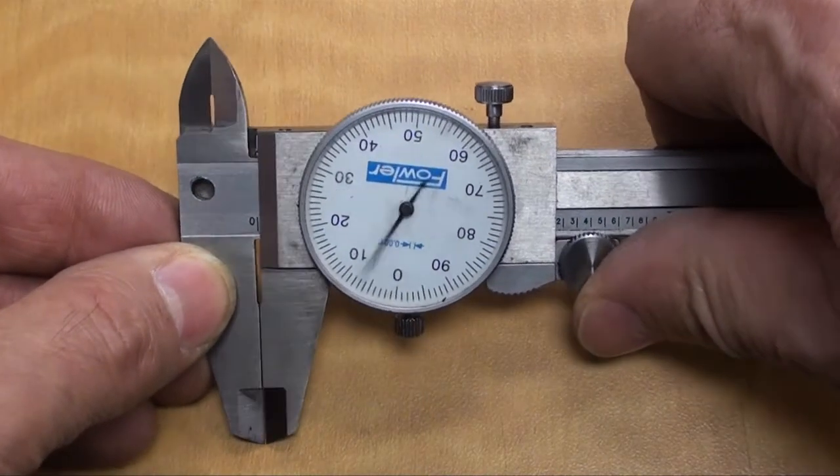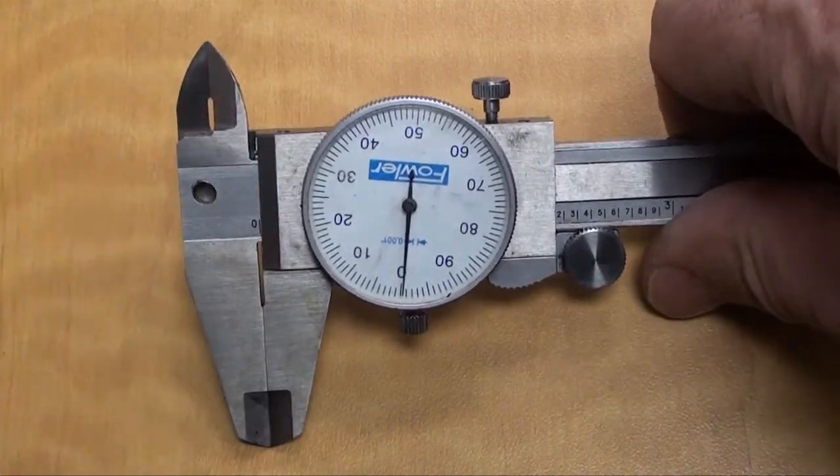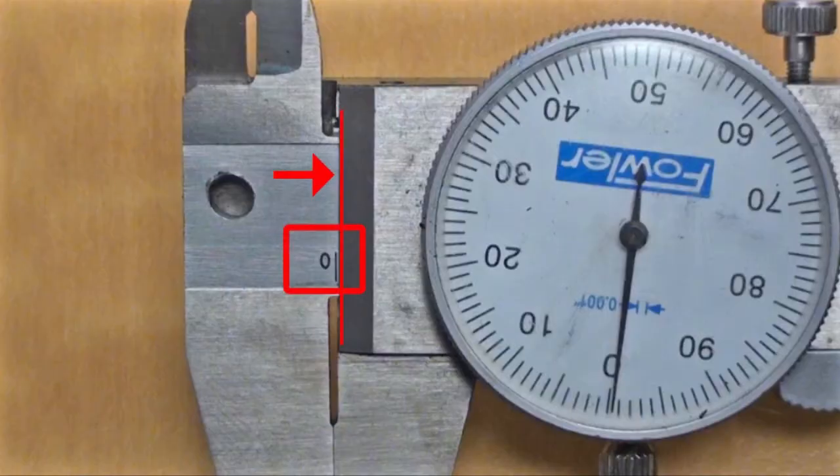When the caliper is closed with the thumb wheel, the trailing edge of the slider should line up with the zero line on the linear scale. In addition, the pointer on the dial should line up with the dial zero line.